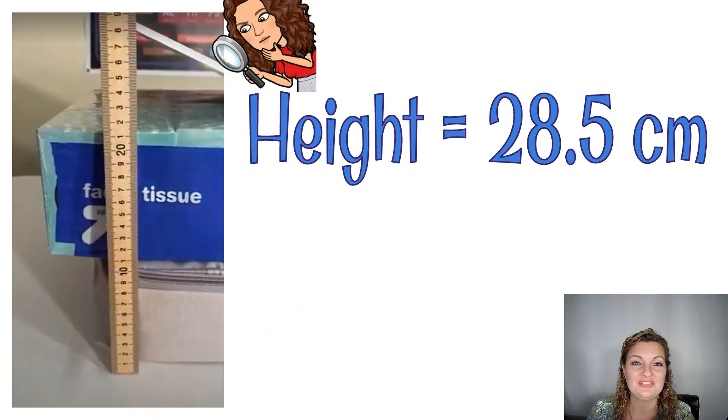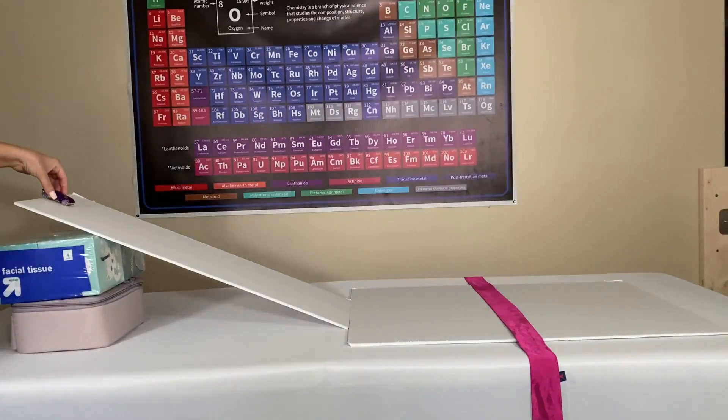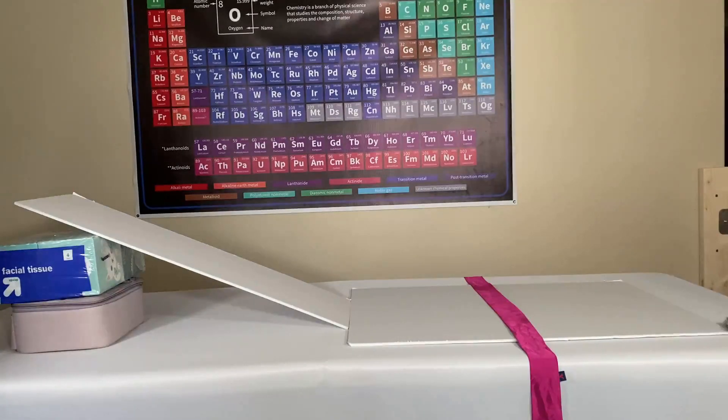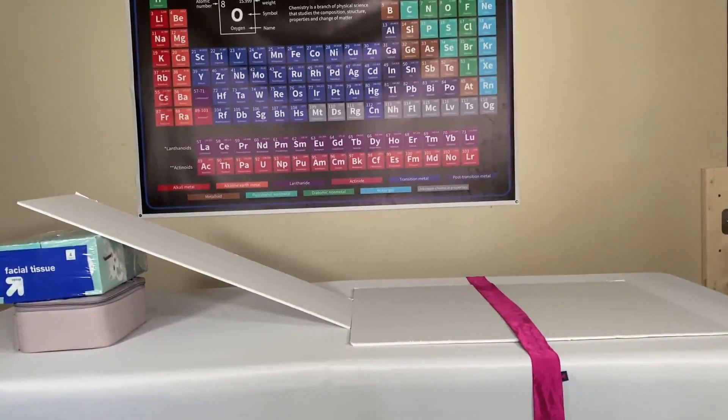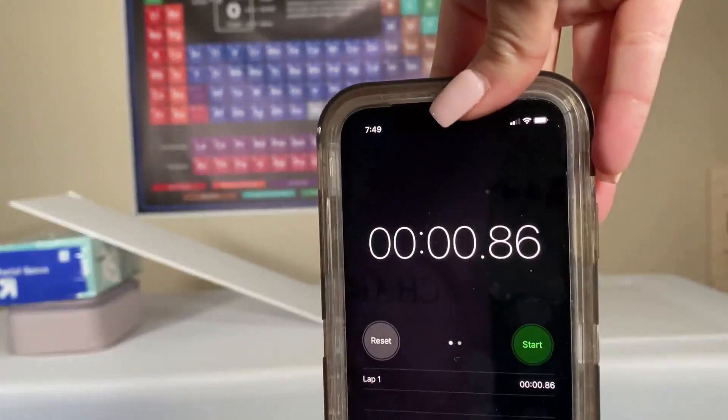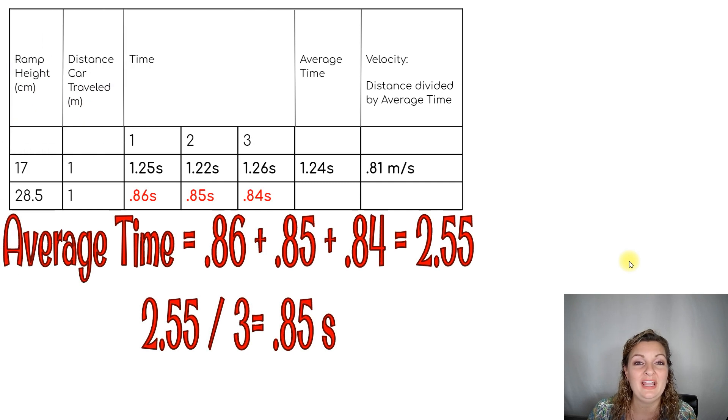So now in order to compare heights for potential energy, we're going to raise a ramp up higher. So I just took what I had around the house, which was some Kleenex boxes, and I raised my ramp up higher. You can see now that it's at about 28.5 centimeters. All right, so now we're conducting the whole lab again, our three trials at our increased height. You can see that our first one was at 0.86 seconds. All right, and just like the first time you need to go ahead and repeat those trials for number two and number three. You can see what I got: I got 0.85 seconds for the second trial and 0.84 seconds for the third trial.